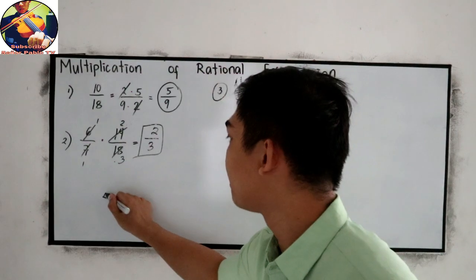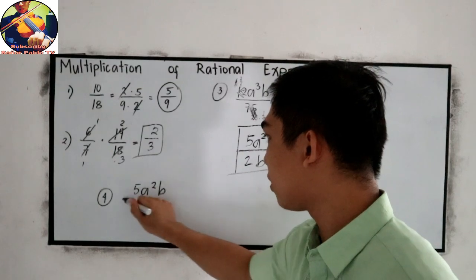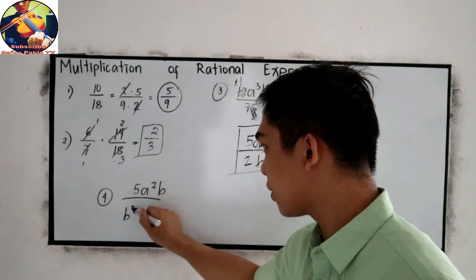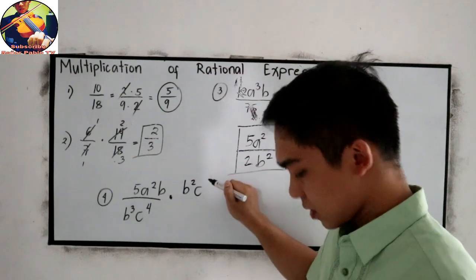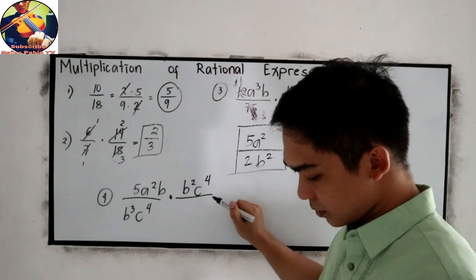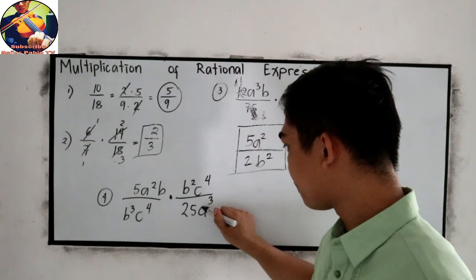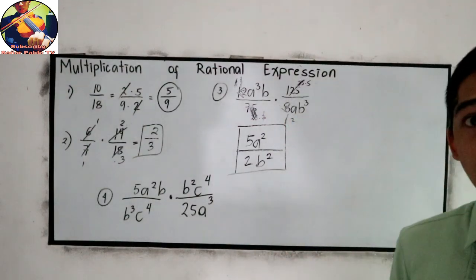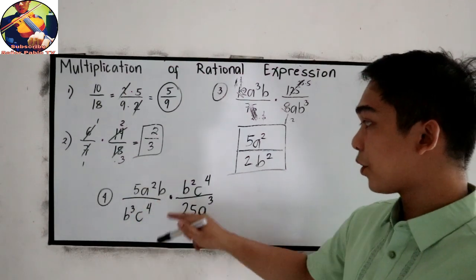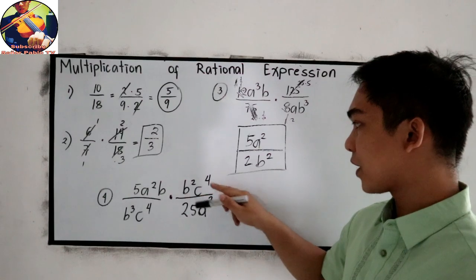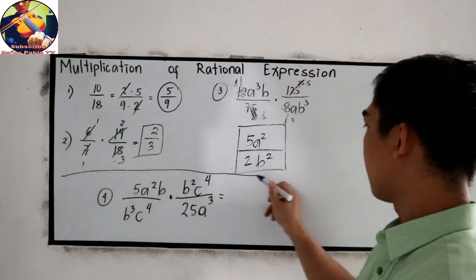Let's try this one. Number 4: 5A squared B all over B cubed C raised to 4 times B squared C raised to 4 all over 25AC cubed.